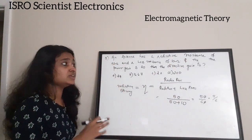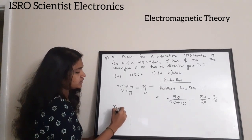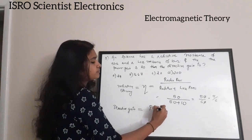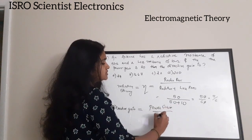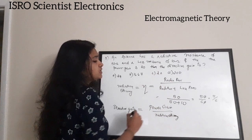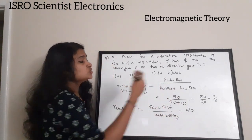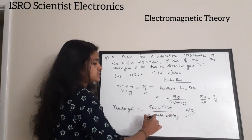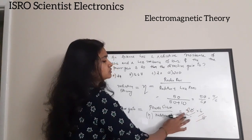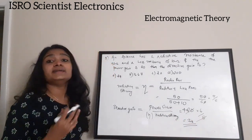We need to find the directive gain. The equation is: directive gain = power gain / radiation efficiency η. Power gain is given as 20, and η = 5/6, so directive gain = 20 ÷ (5/6) = 20 × (6/5) = 24.